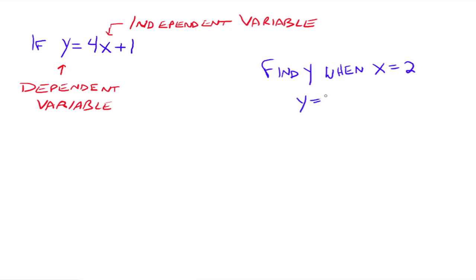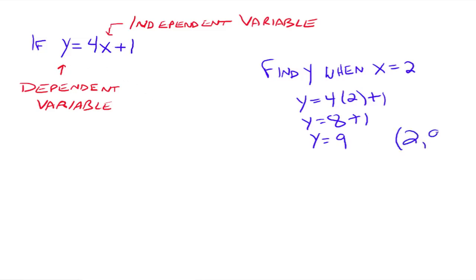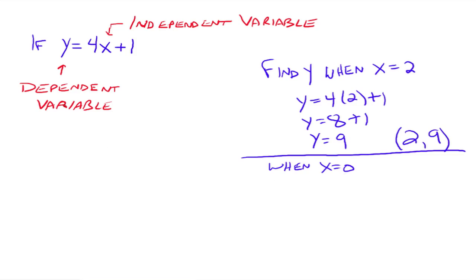For example, find y when x equals 2: y equals 4 times 2 plus 1, so y equals 9. The ordered pair (2, 9) is a solution. When x is 0: y equals 4 times 0 plus 1, so y equals 1. The ordered pair is (0, 1). We just choose a value for x, plug it in, and the arithmetic tells us what y will be.